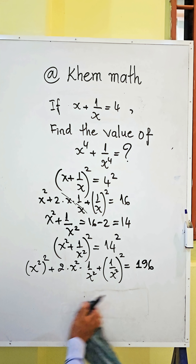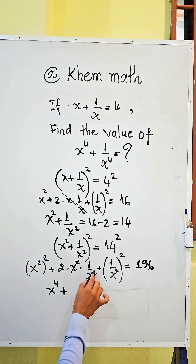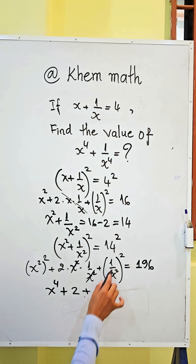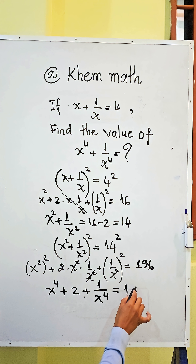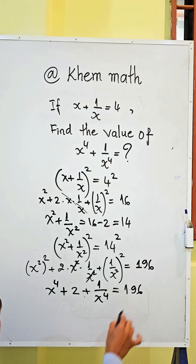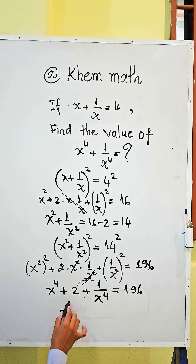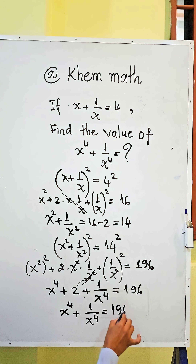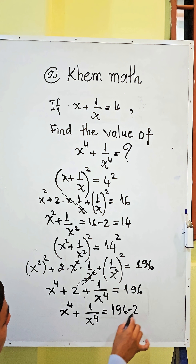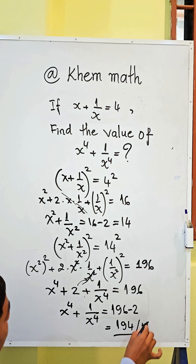Then we get x⁴ plus 1/x⁴ plus 2 equals 196. Moving 2 to the right-hand side, we get x⁴ plus 1/x⁴ equals 196 minus 2, which equals 194. This is our answer.